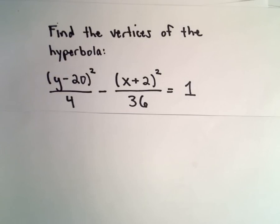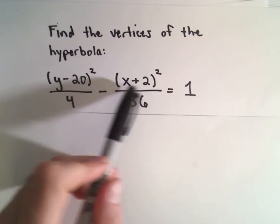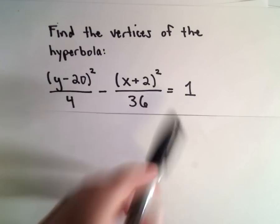Okay, here we're going to find the vertices of the hyperbola: y minus 20 squared divided by 4 minus x plus 2 squared divided by 36 equals 1.